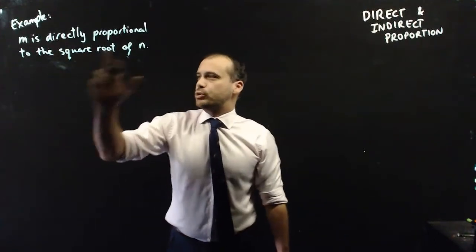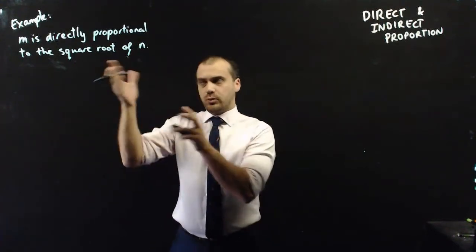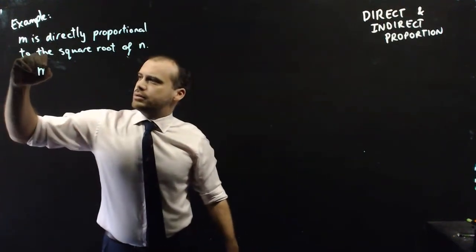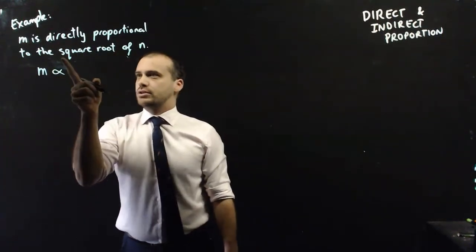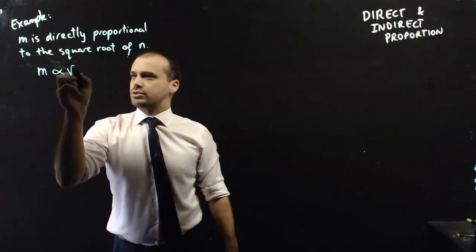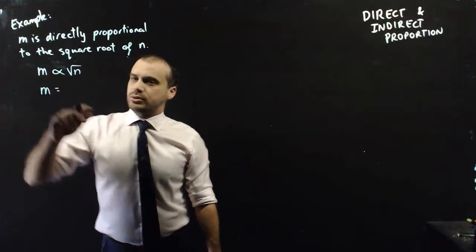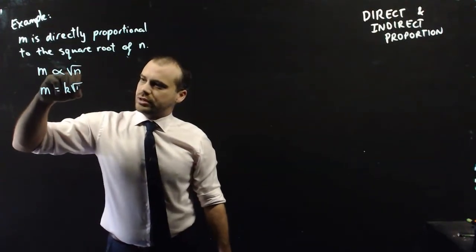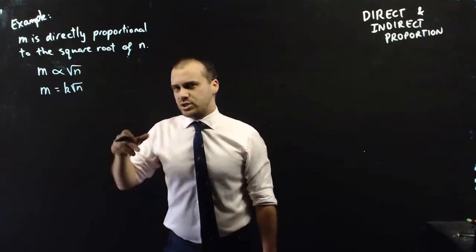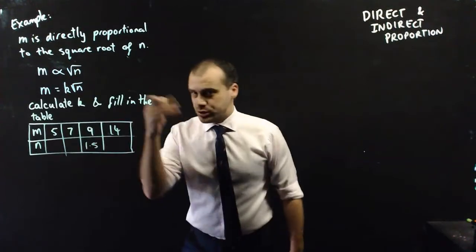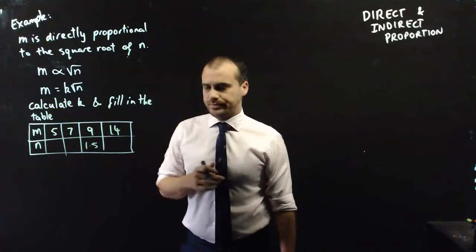So, what would it mean if m is directly proportional to the square root of n? Well, we just write mathematically what we're reading. m is directly proportional to the square root of n. And then we can write that as m equals the constant of proportionality root n. Now that we've got a formula, let me give you a bit more information and we can do something with it. So, part two of our question says, calculate k and fill in the table below.